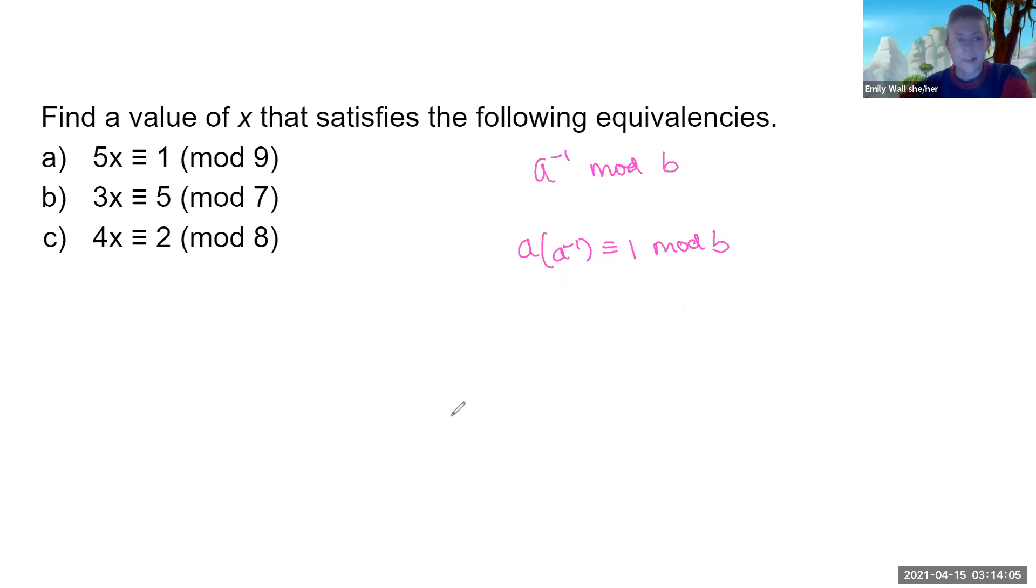So getting started with that. Part A is straight up looking for five's inverse, because five times five's inverse will be equivalent to 1 mod 9. So how do we find that by observation? Well, you could just stare at it and think about it for a while. Whatever works. What I like to do is I know that the inverse will be a small number because they're asking us to find it by observation. So I just try different small positive integers until I find one that works.